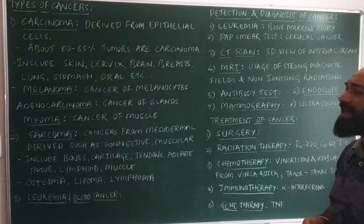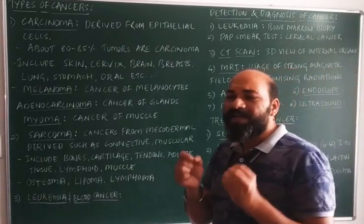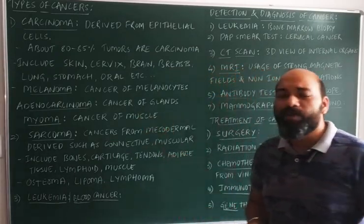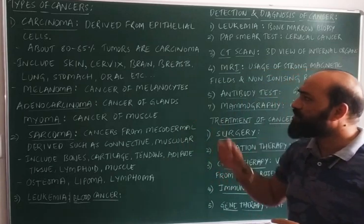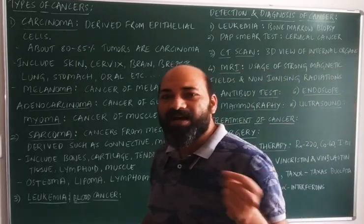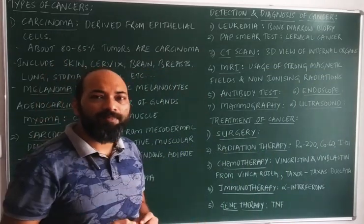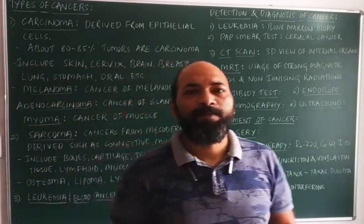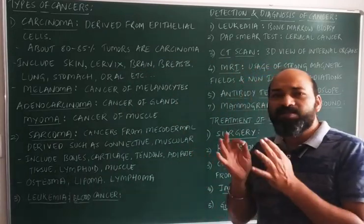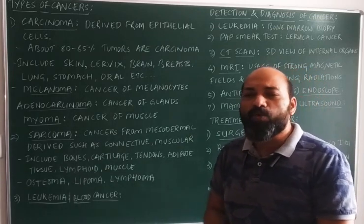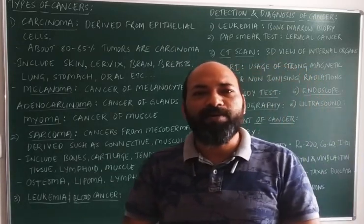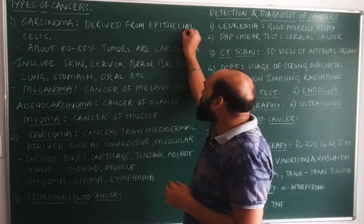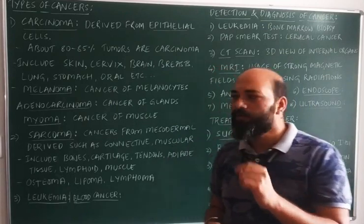Now we will discuss the types of cancers based on where they have originated. Based on the origination of cancers, we have mainly three different types: the first one is called carcinoma, the second is called sarcoma, and the third is called leukemia. Carcinoma is a type of cancer derived from epithelial cells, and it is the most widespread — about 80 to 85 percent of cancers reported are carcinomas.